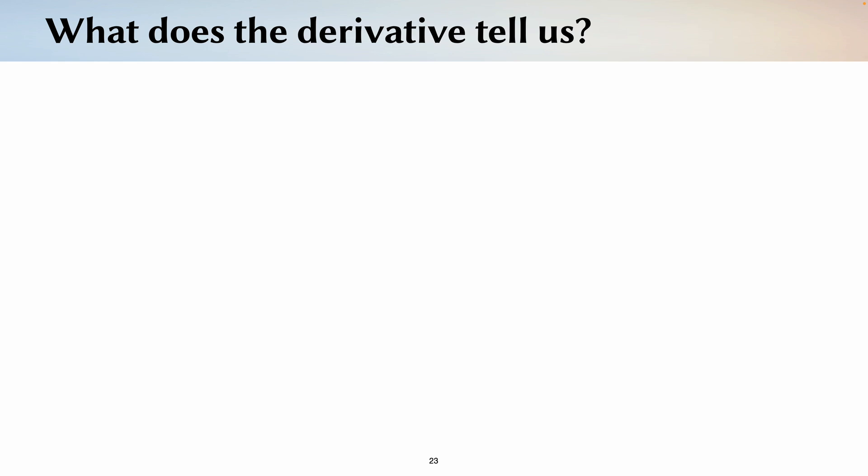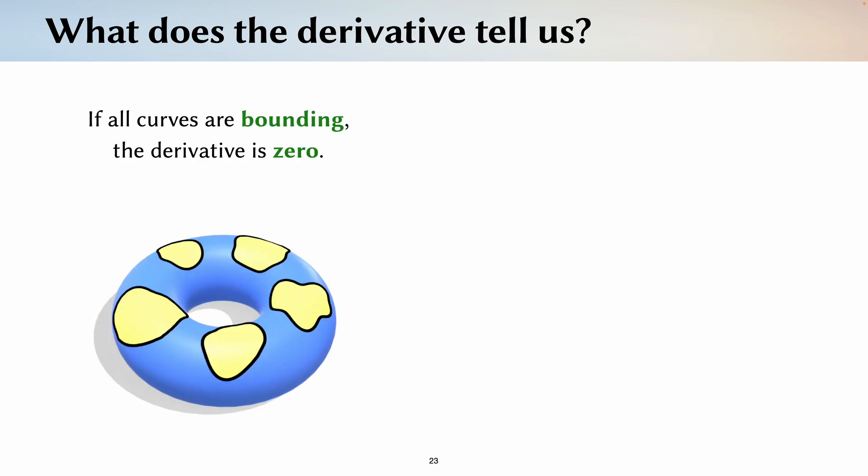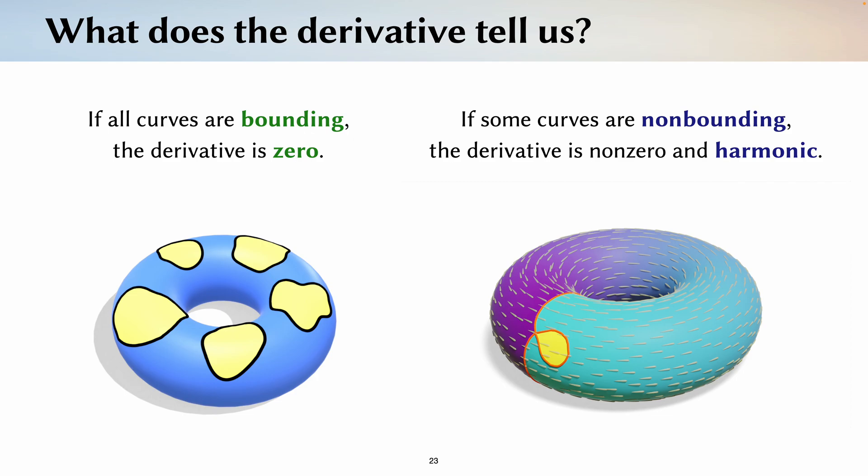Now, what does the derivative tell us? Well, we care about this derivative because it tells us about the presence of non-bounding curves. In particular, the derivative is zero if and only if our function is piecewise constant, meaning we already have a valid set of region labels. Otherwise, our derivative is a non-zero harmonic vector field, meaning we have some non-bounding curves polluting the winding number function.